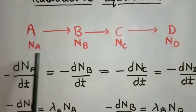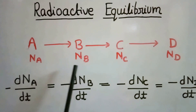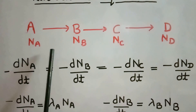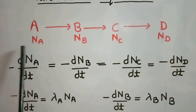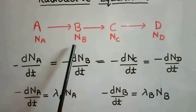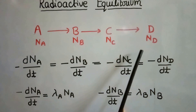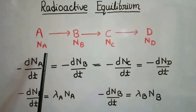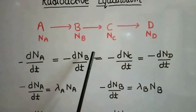So after some time, we get a condition where the rate of decomposing of each element becomes equal. It means that the number of atoms of each element becomes constant. Suppose after time T, the number of atoms of A becomes NA, of B becomes NB, of C becomes NC, and of D becomes ND. This condition is known as the equilibrium condition.